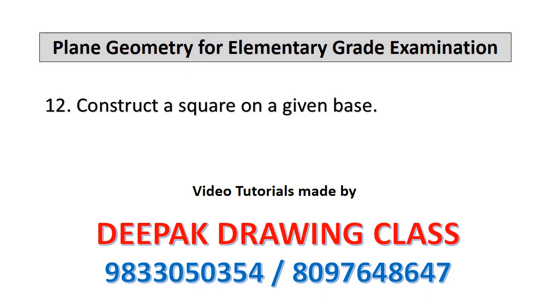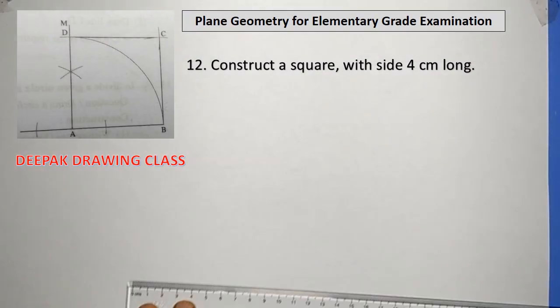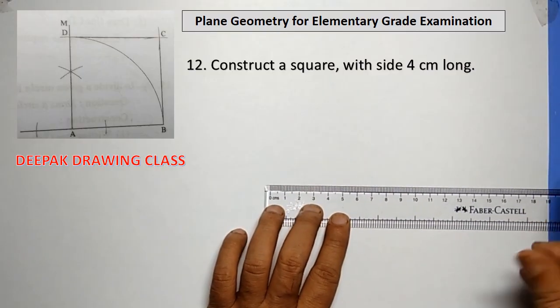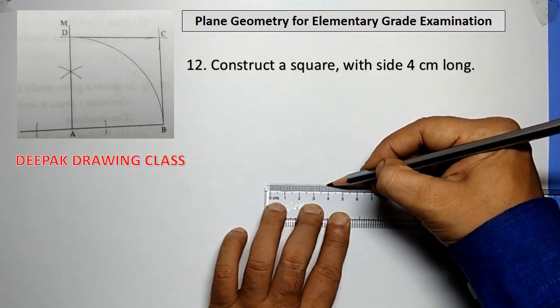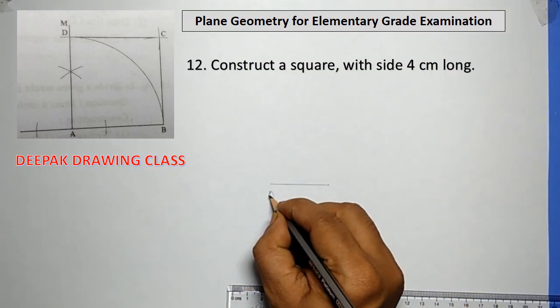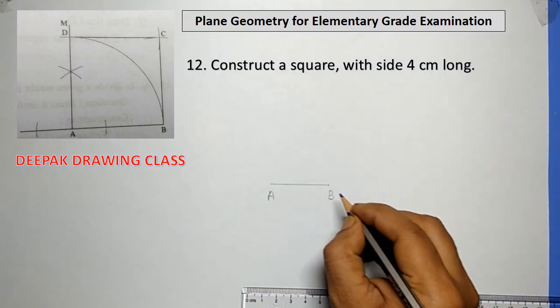Hello friends, welcome to the Pugrowing class. Today we will learn some basic constructions of plane geometry for elementary grade examination. Our twelfth construction is how to construct a square on a given base.